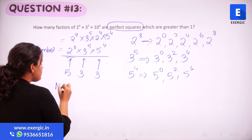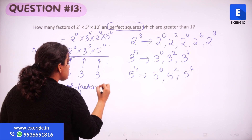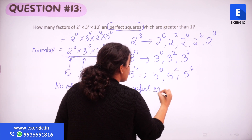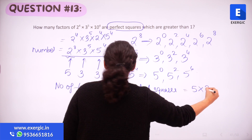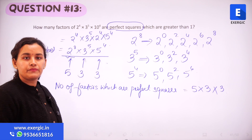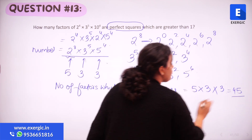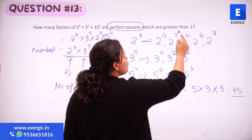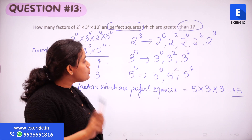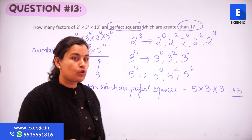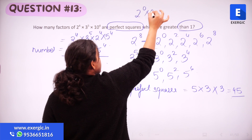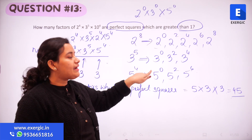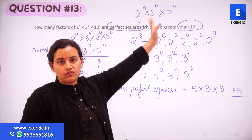So the total number of factors which are perfect squares is going to be 5 multiplied by 3 multiplied by 3, which is 45. However, this 45 also includes the number 1 — the case where all powers are 0: 2⁰ into 3⁰ into 5⁰ equals 1 into 1 into 1, which gives 1.